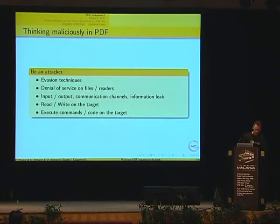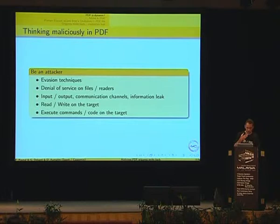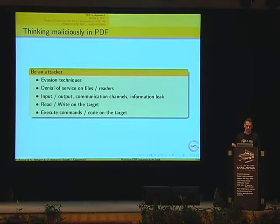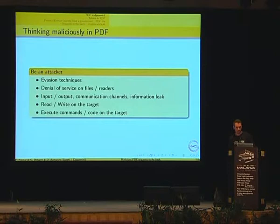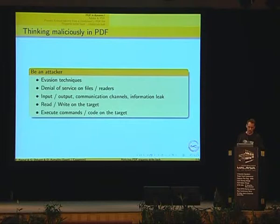When looking at the PDF language, we thought about it in very bad ways. We focused on five directions: evasion tricks — as an attacker I don't want to go to jail, so I have to be invisible. For instance, we built a PDF that can be opened either as a JPEG image or as a PDF file depending on the software, to bypass antivirus. You can do denial of service. Next issue: sending the payload and being able to communicate with it — input/output communication, reading and executing on the remote target. We found ways to do most of them.